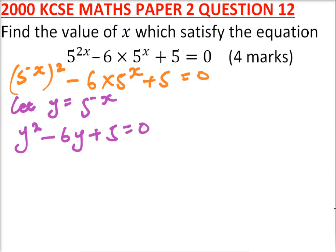This is a quadratic equation, so we can factorize it. We get two numbers, m plus n should give you minus 6, and m multiplied by n should give you 5. Let us use minus 5 and minus 1. When you add, you get minus 6. When you multiply, you get 5.